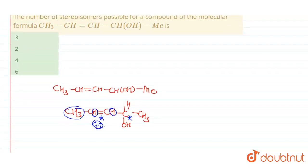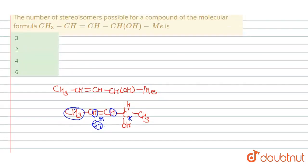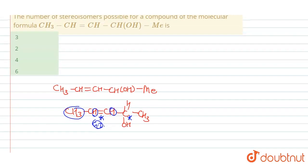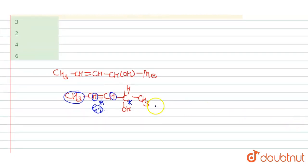So in this molecule, we have two stereo centers in total — one geometrical center at the C=C double bond and one chiral center at the CHOH carbon.